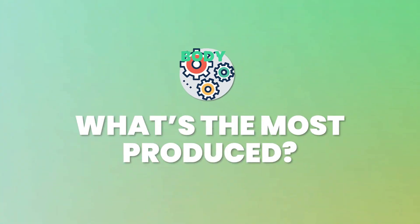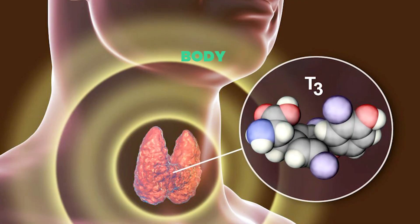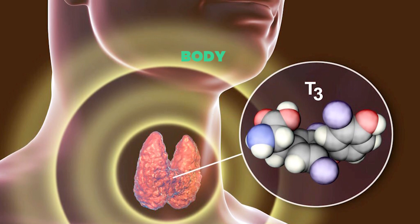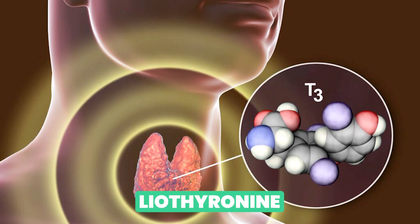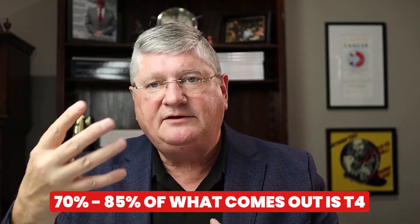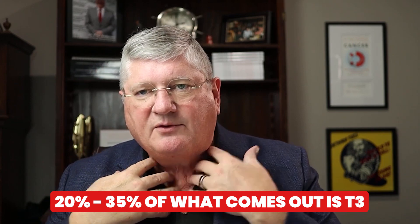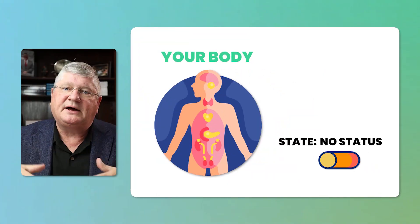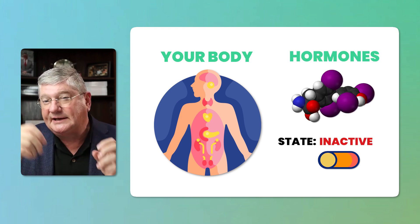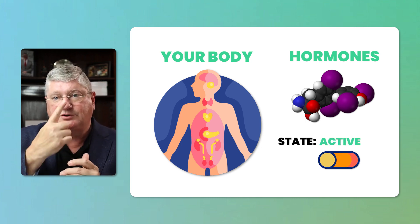T4 is also called levothyroxine and is the most produced — somewhere around 70 to 85 percent of what comes out of your thyroid is T4. T3, called liothyronine, is made in a smaller quantity, about 20 to 30 percent. T4 is not very active because it has to have one iodine taken off to become T3. T3 is active and ready to go. Your body sometimes makes hormones in an inactive state so they travel to where they're supposed to go, then get activated when they arrive at the cell.